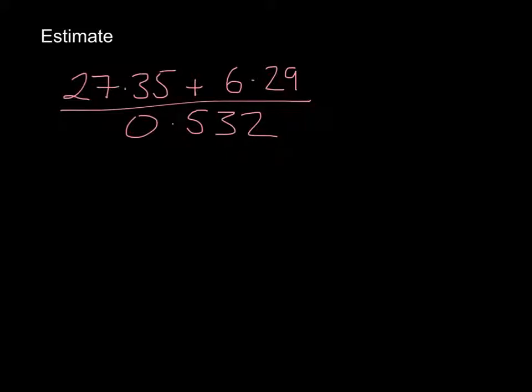So here we have a question where we've got a divide by 0.532. It's a number that's less than 1 on the bottom. And it's an estimate question, so we just start this question like we do with every other estimate question, and that is rounding our numbers to one significant figure.